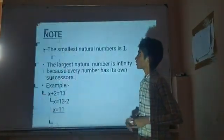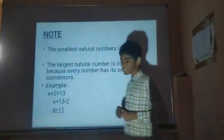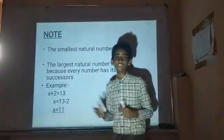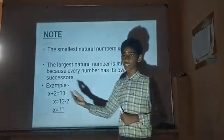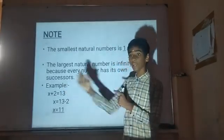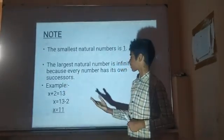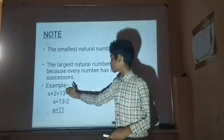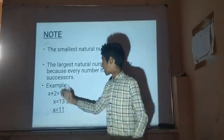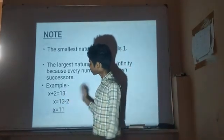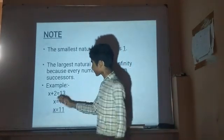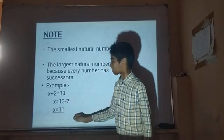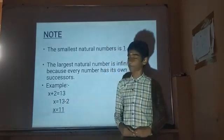Note: the smallest natural number is 1. The largest natural number is infinity because every number has its own successor. Natural numbers are used to solve sums like x plus 2 is equal to 13, so x is equal to 13 minus 2, which gives x equal to 11, which is a natural number.